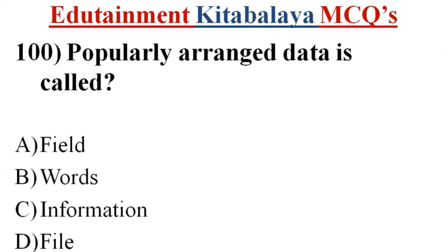Question number 100. Popularly arranged data is called? A. Field. B. Words. C. Information. D. File. Correct answer is C. Information.